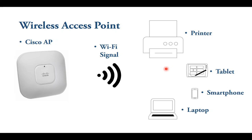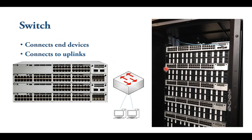Wireless devices such as printers, tablets, laptops, and smartphones connect via access points. Network switches connect end devices such as workstations, access points, phones, printers, and any other components that need an internet connection — like security panels. The switch then connects to an uplink, such as a fiber connection, to another device.